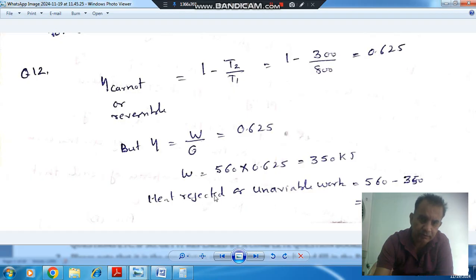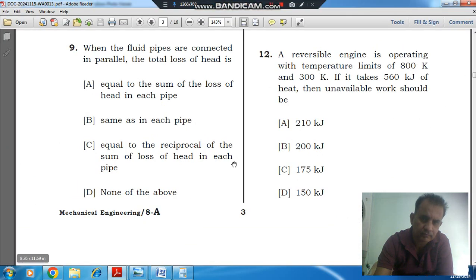So heat rejected, or we can say unavailable work, is 560 minus 350, that is 210 kJ, is the answer and option A. Thank you.